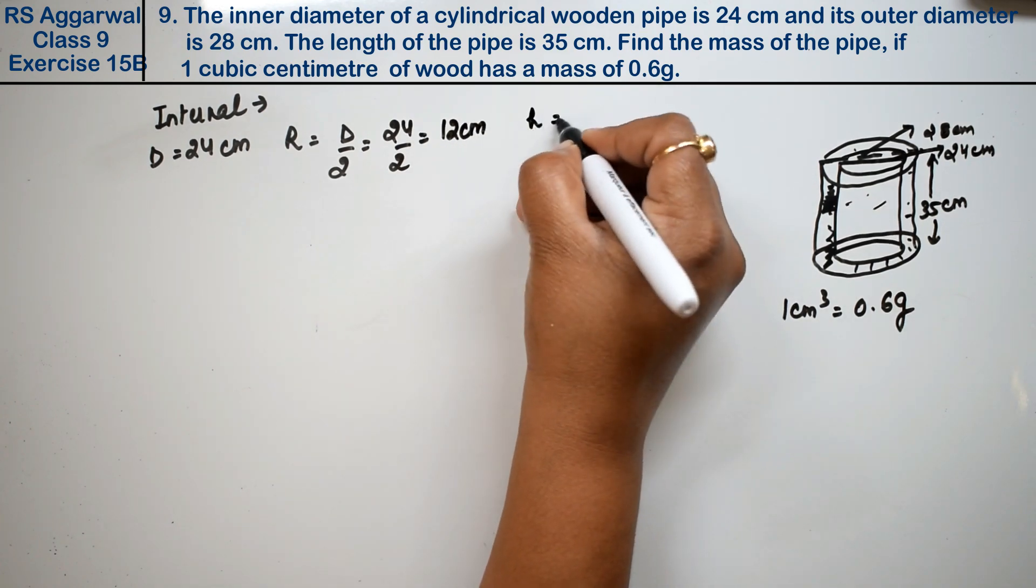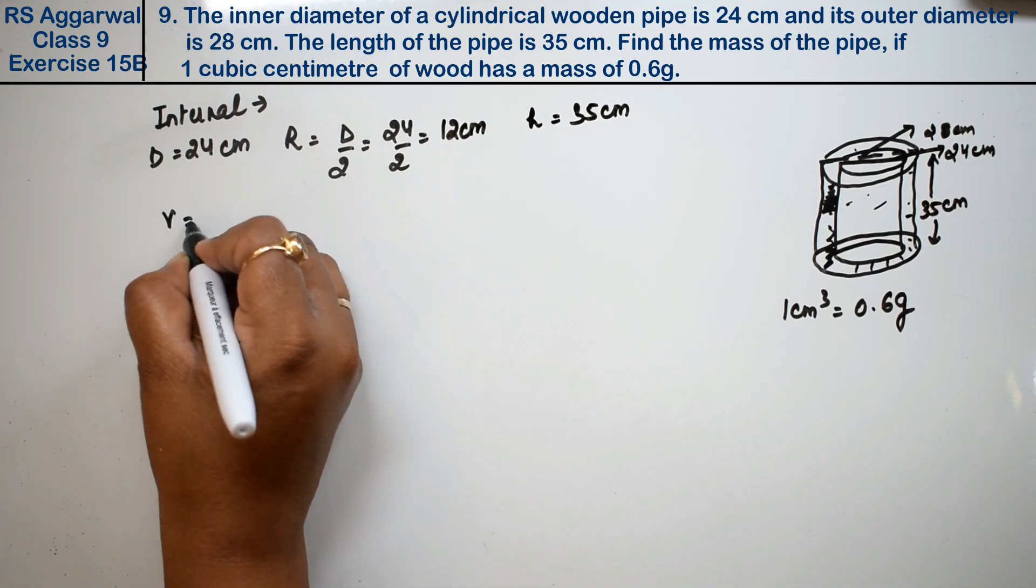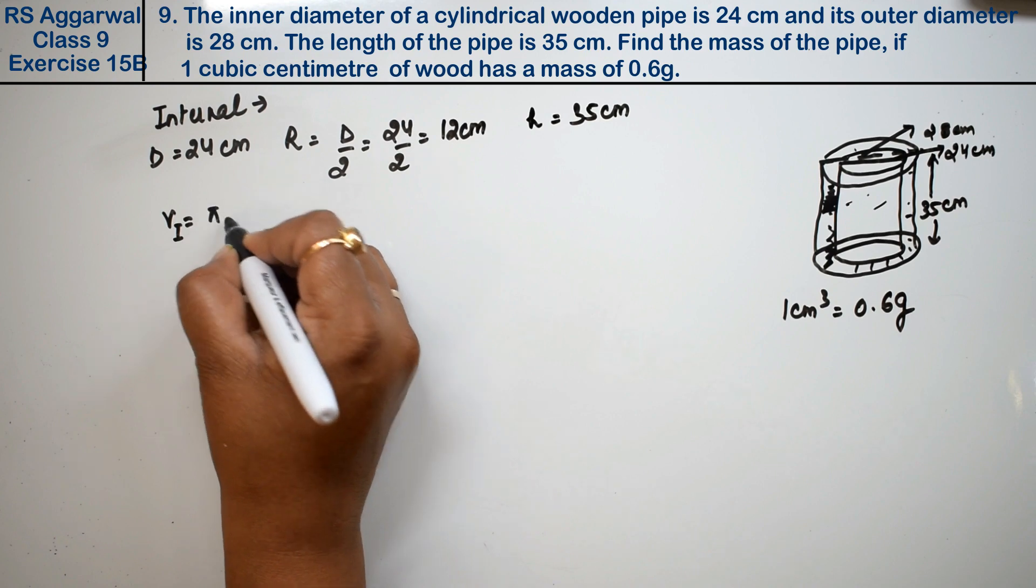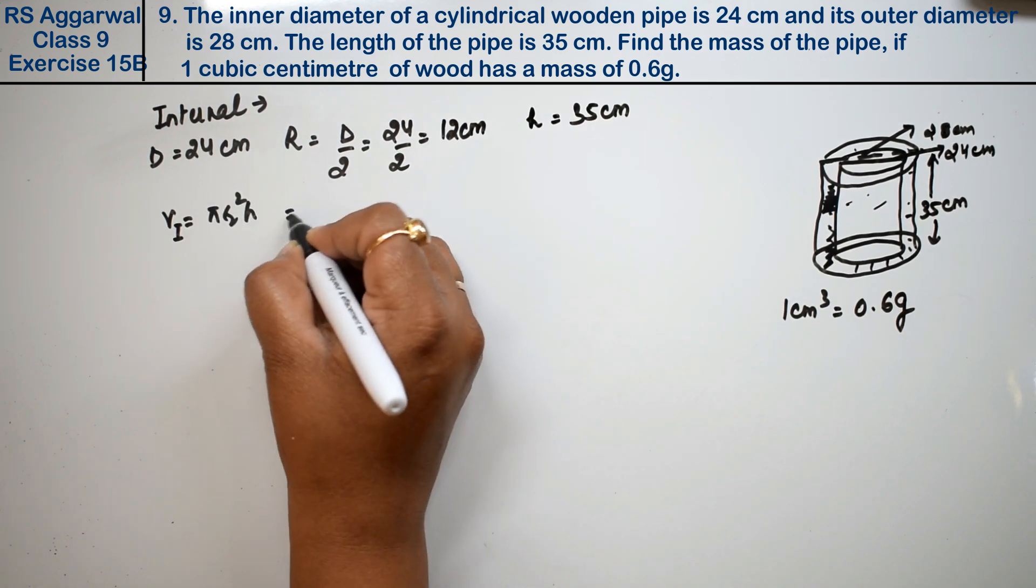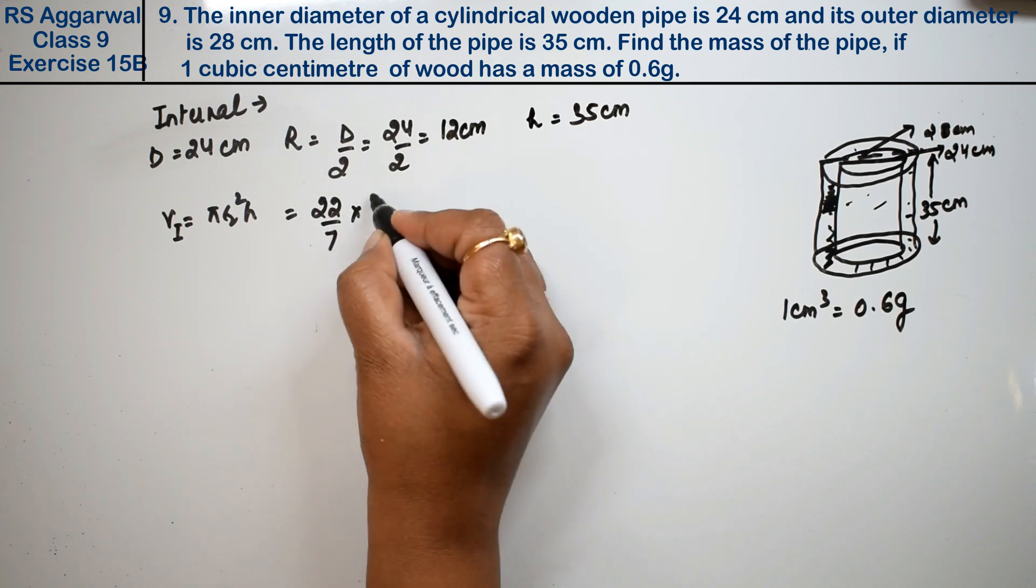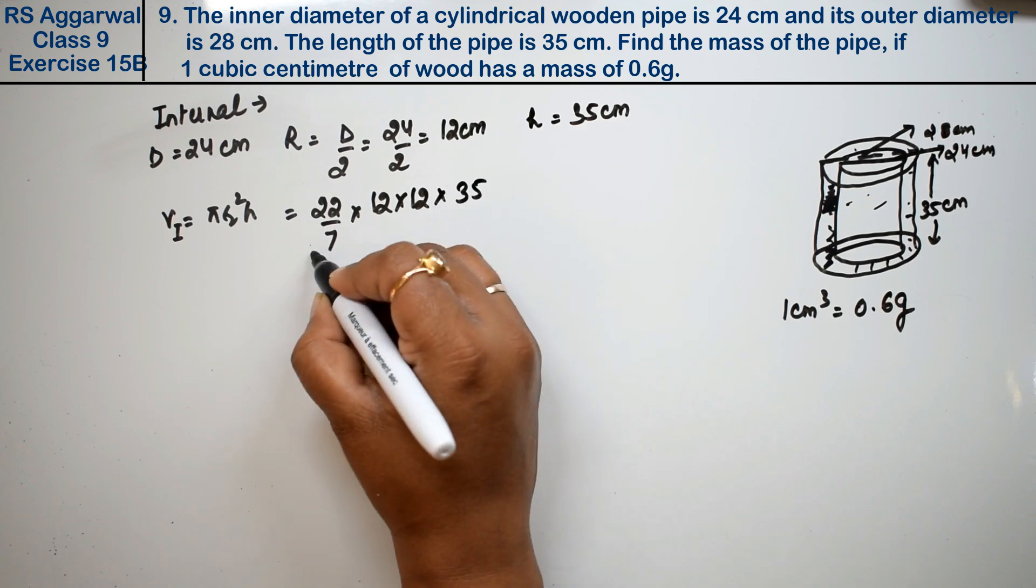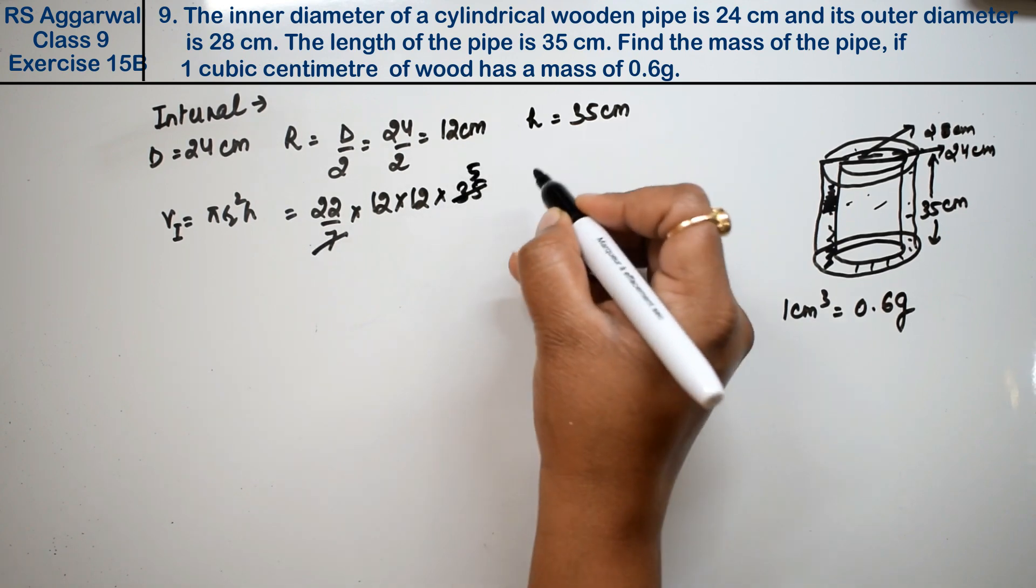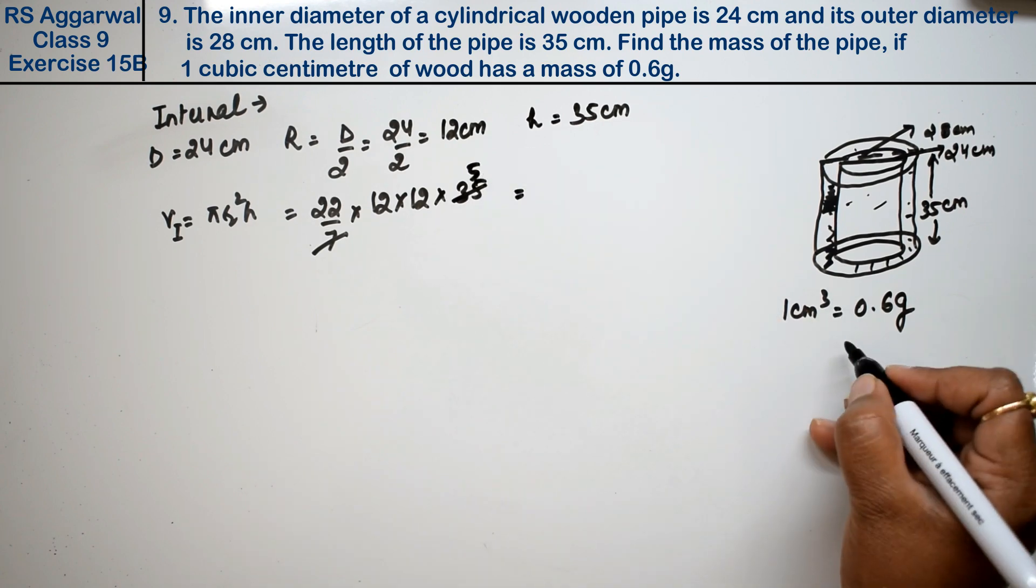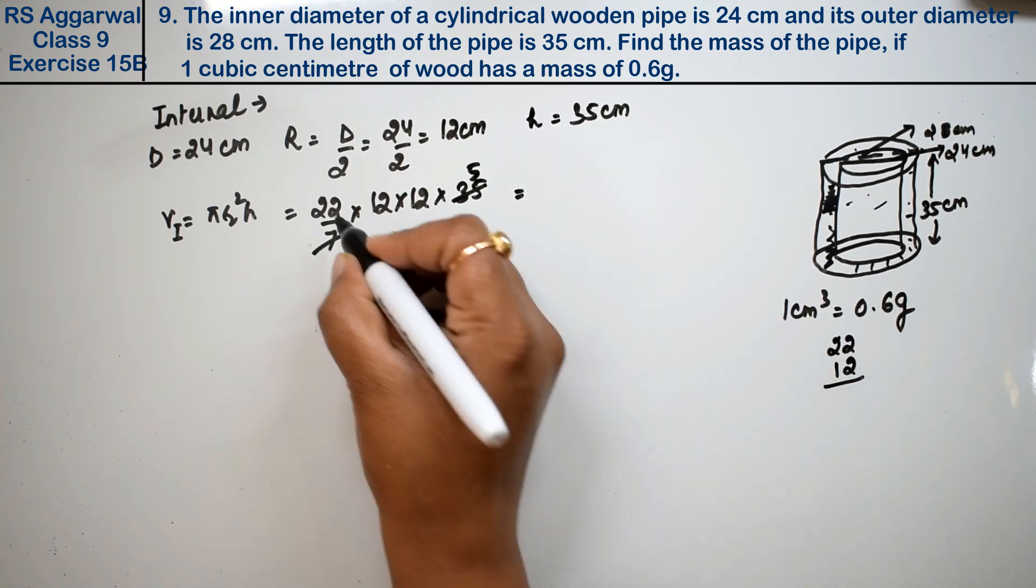And the height given is 35 cm, right friends. So what is the volume? Volume of internal, I'll write: pi r squared h. So 22 upon 7, r squared is 12 times 12, h is 35.